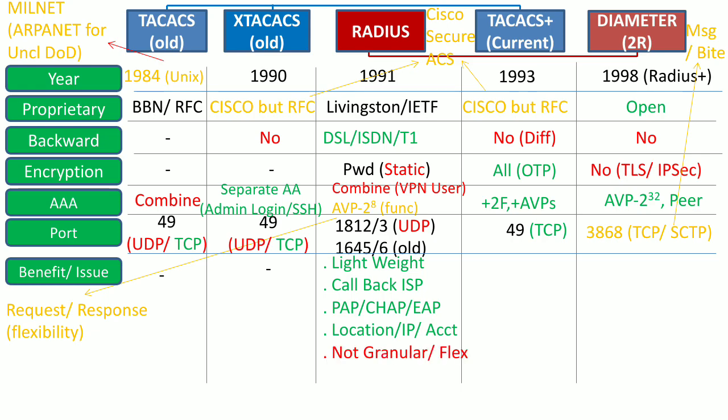However, RADIUS is not as granular as TACACS+, because it does not authorize each single command of an admin, which is the case with TACACS+. Moreover, it is not as flexible as TACACS+ or Diameter, because attribute value pairs are fewer than in TACACS+ or Diameter. And it is not as scalable as the other two technologies.